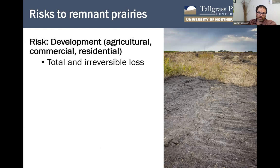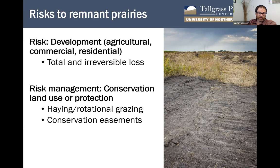Without a doubt, many prairie remnants still face risk from development — mostly from conversion to crops, but also commercial and residential development. These losses are total and irreversible. While we have made progress in prairie restoration, we are still nowhere near being able to restore all the species of bacteria, fungi, nematodes, plants, insects, and the whole web that is unique to tallgrass prairie remnants. These took hundreds or even thousands of years to assemble, so once these places are gone, they're gone forever and all people lose all benefits. The main mitigation strategy is to protect them — either by using them in a way compatible with biodiversity conservation, or by placing legal protections through conservation easements.